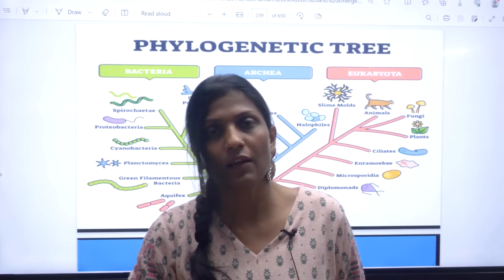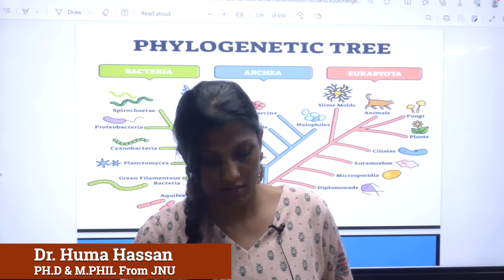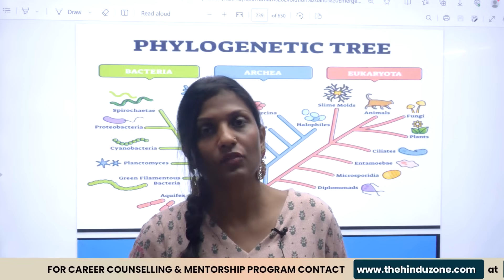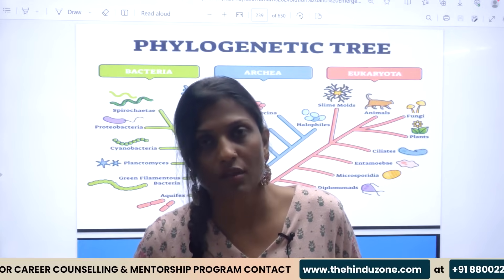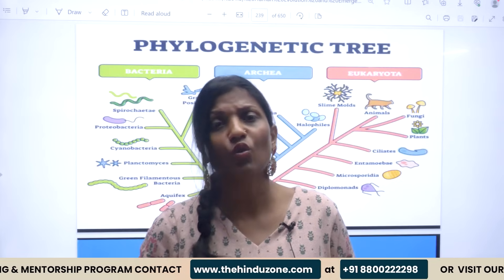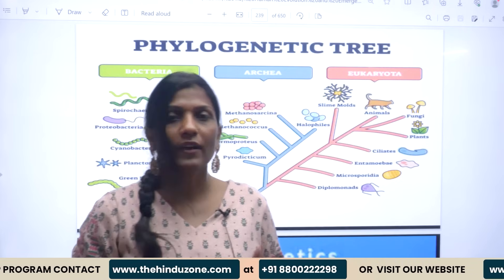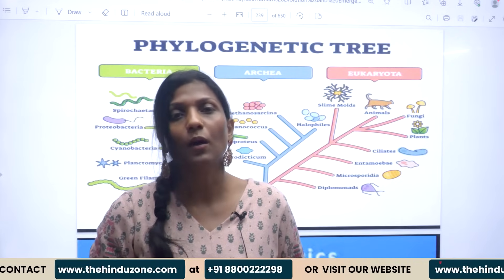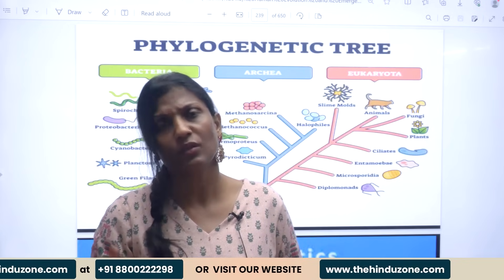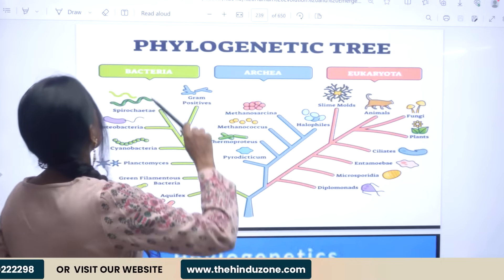Today we will have a discussion on phylogenetic status. This is topic 1.6 in anthropology optional paper one. In phylogeny, we discuss the evolutionary history of any organism, animal, or species.